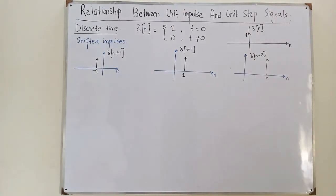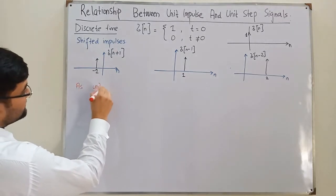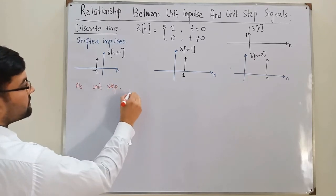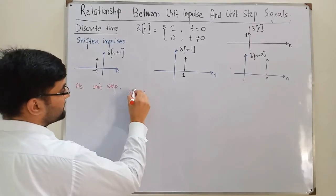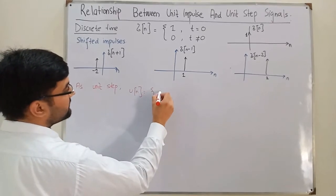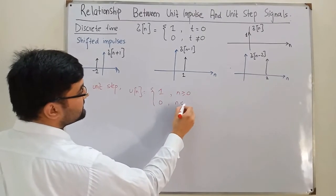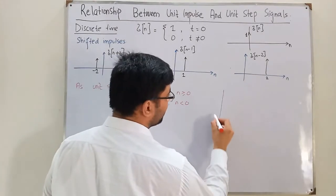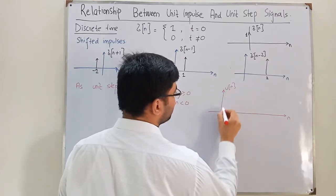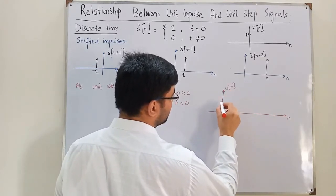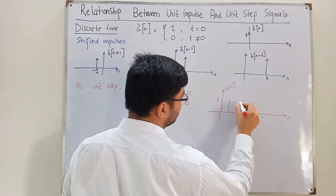Now, as we know, the unit step signal: U of n — we are dealing with discrete time — so U of n equals 1 for n greater than or equal to 0, and 0 for n less than 0. So U of n in the discrete time looks like this on the graph: this is 1 at positions 0, 1, 2, 3, 4 and so on.